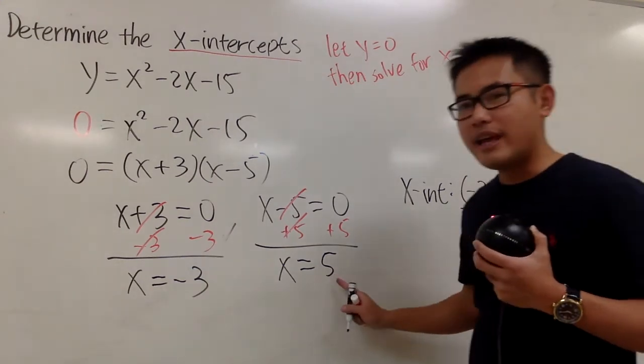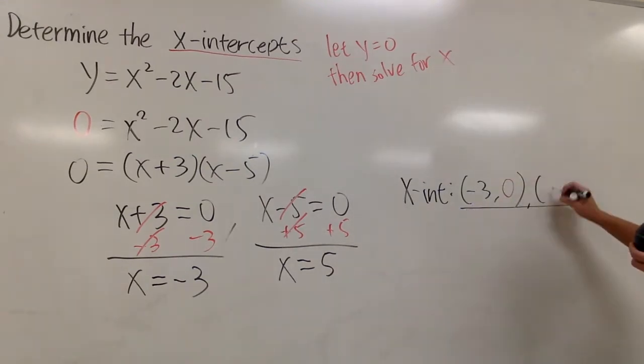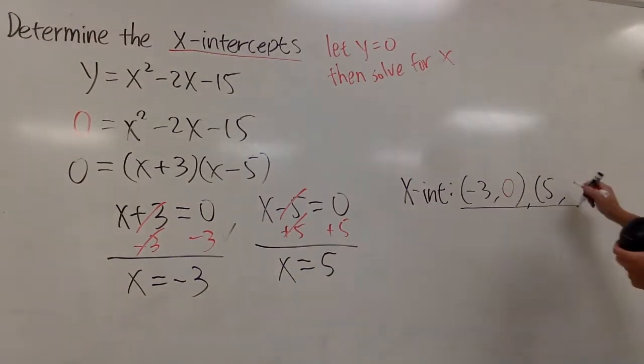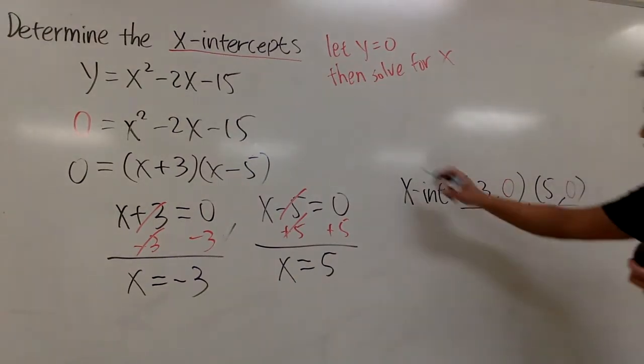And the second one is, when x is 5, y is 0, because we make it to be so. And then right here, we are done.